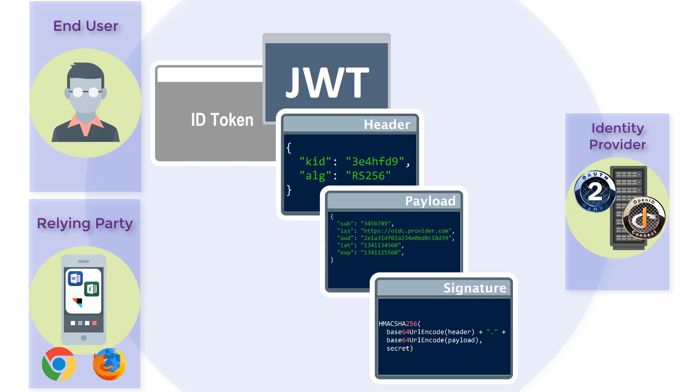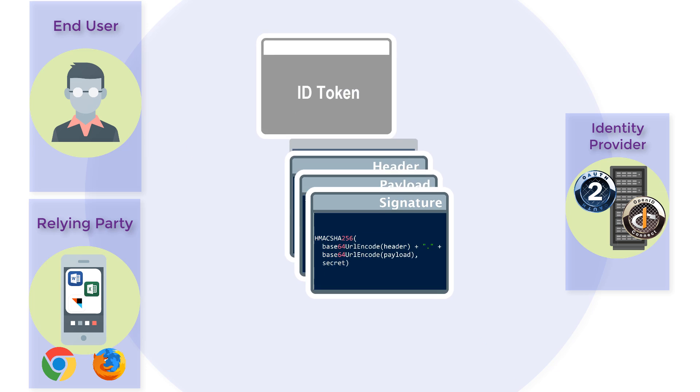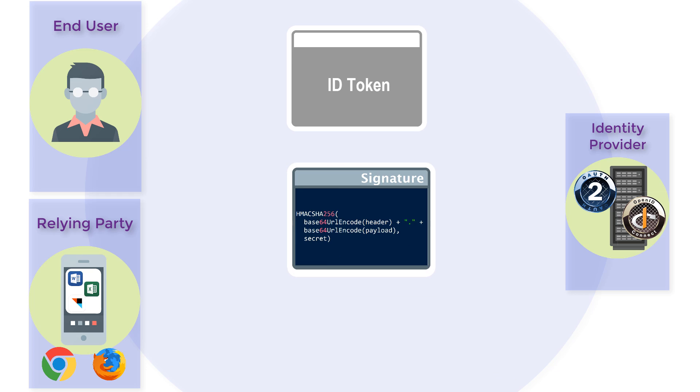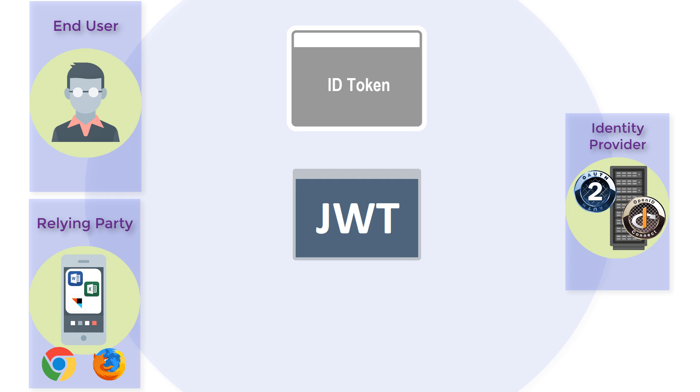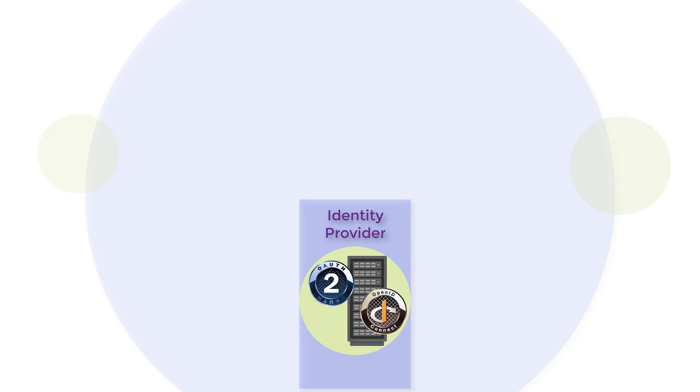The header, payload, and signature are combined into a JWT and may also be encrypted with JSON Web Encryption for confidentiality.